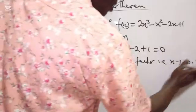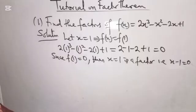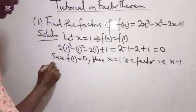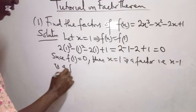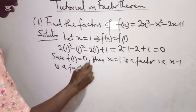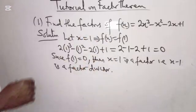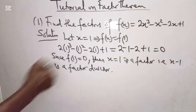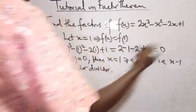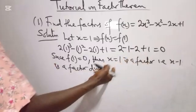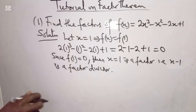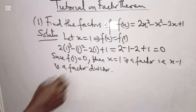So x minus 1 is a factor divisor. If we divide this function by x minus 1, we are going to get 0 — there won't be a remainder. Now let's try x equals minus 1.